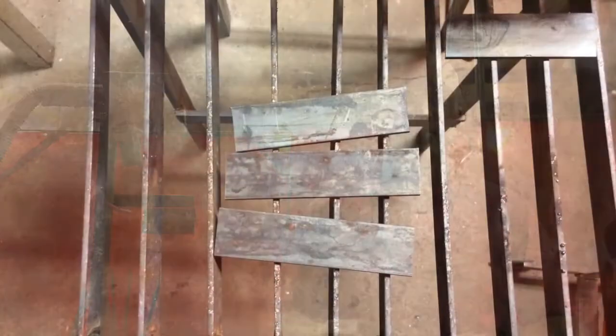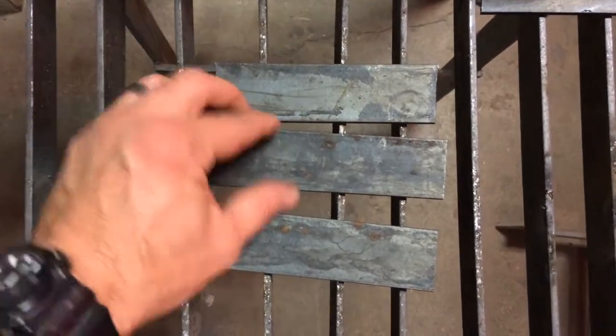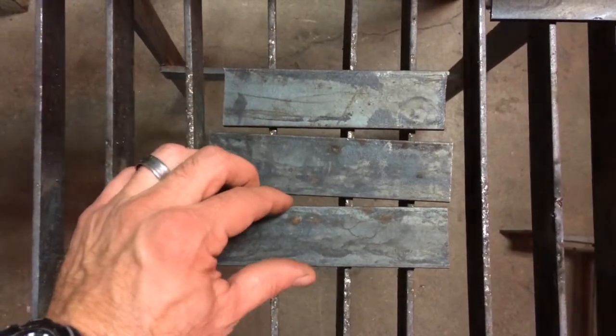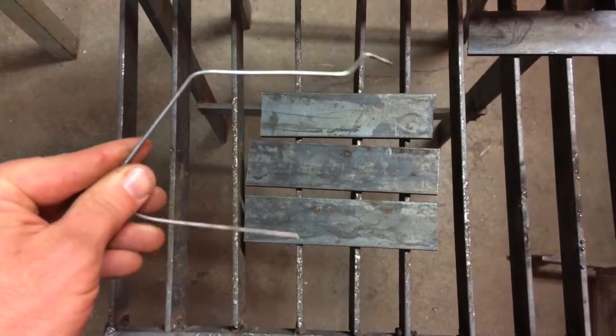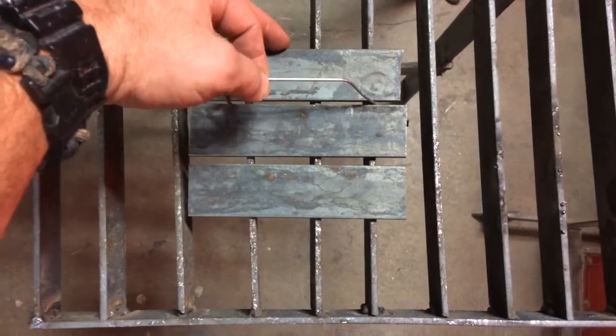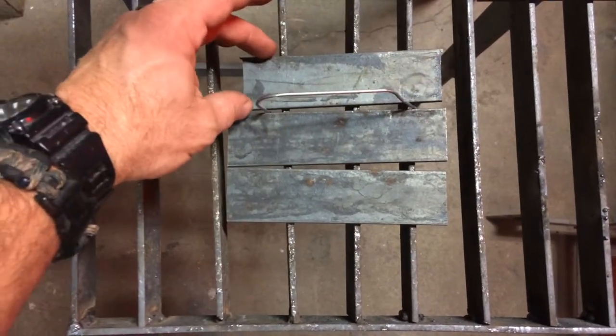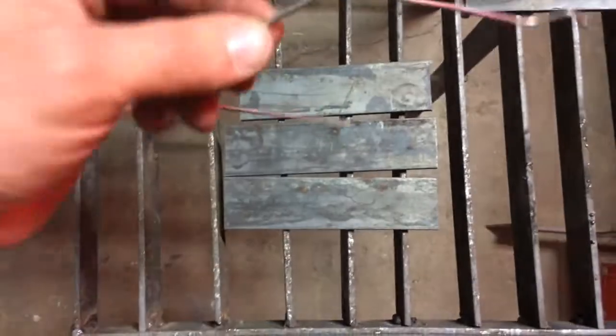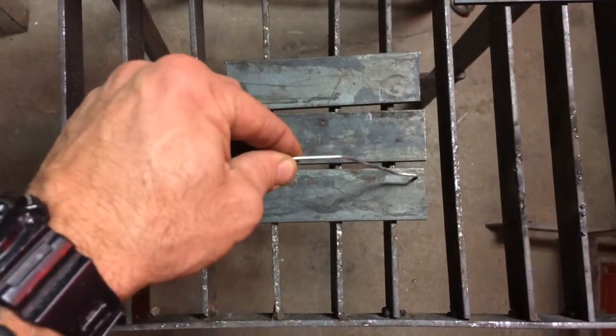You've got your three pieces of steel and you're going to tack weld them together. The way we're going to do that and keep our gap is to use a clothes hanger. Stick the clothes hanger between the two pieces, push them together, tack one end, tack the other, pull the hanger out, put it in on the bottom.